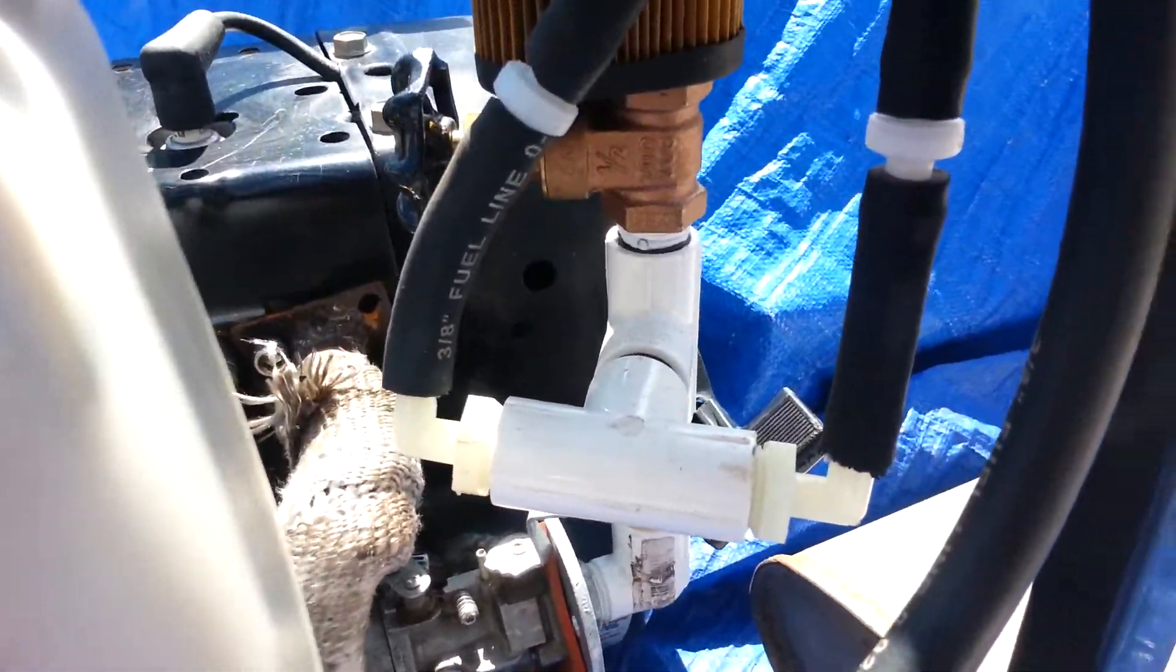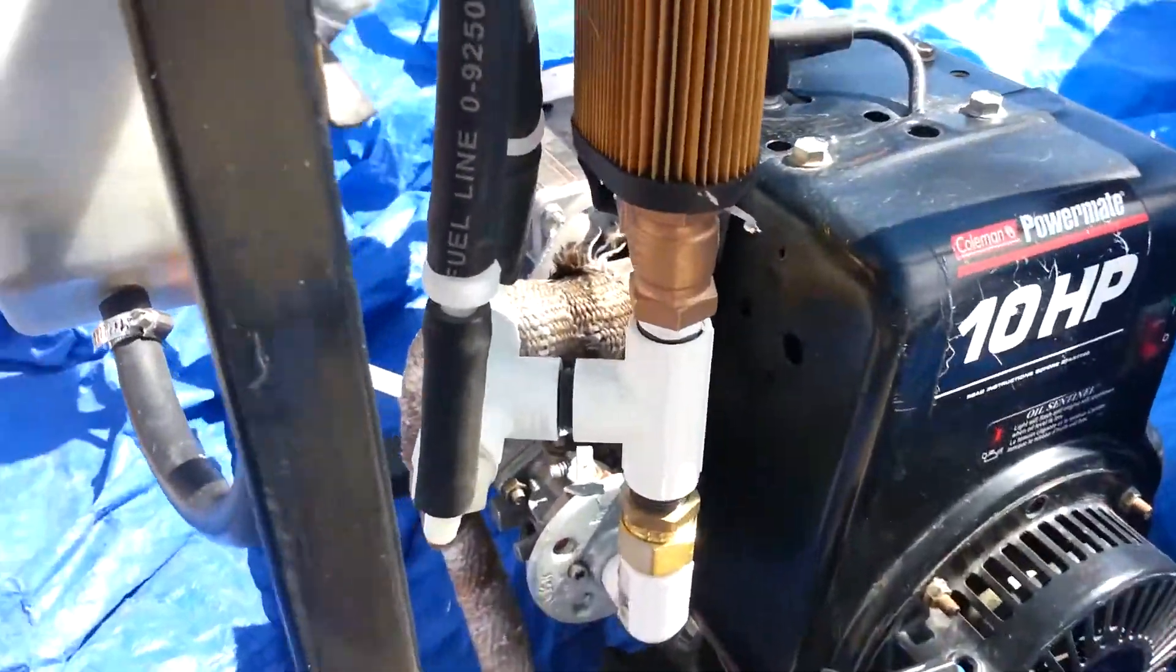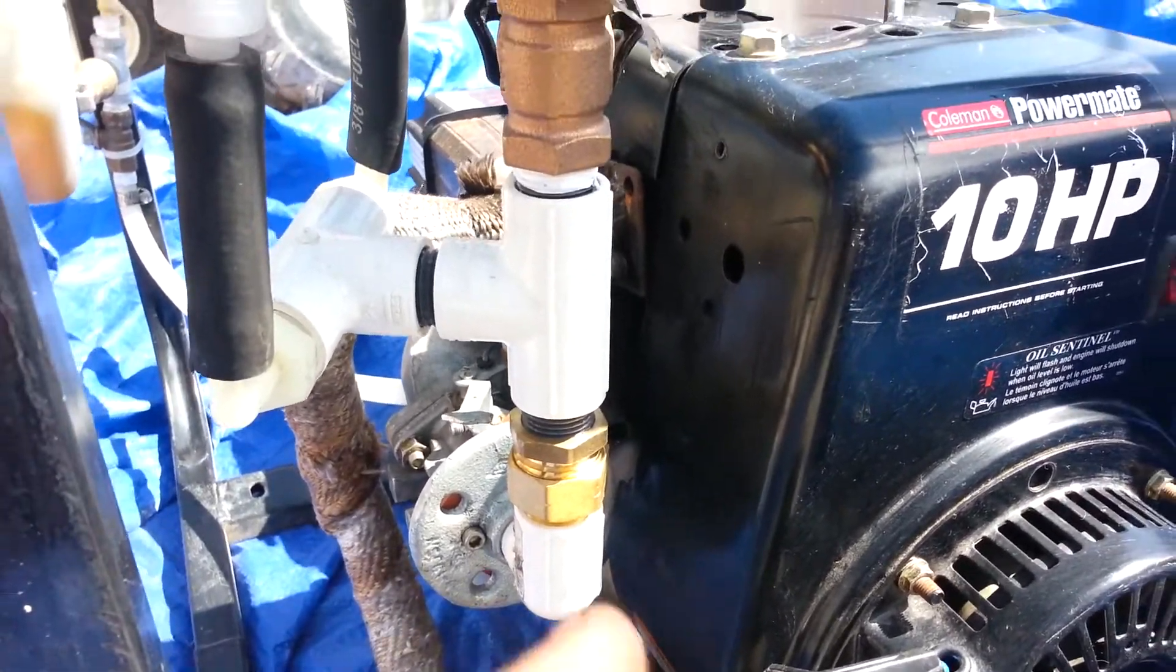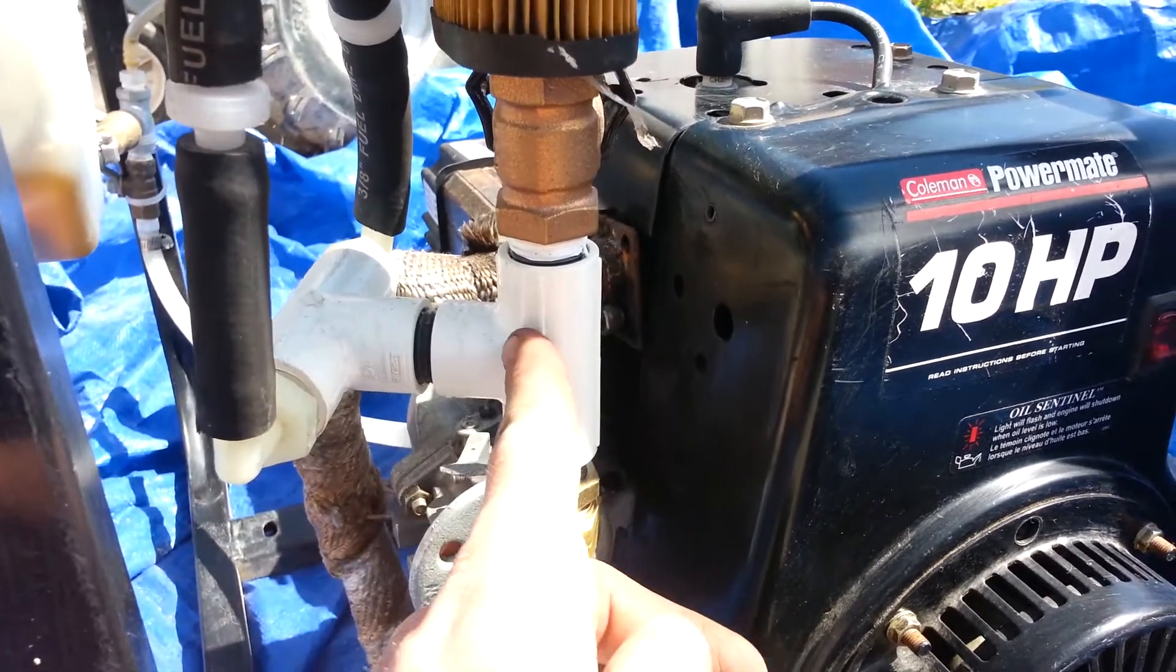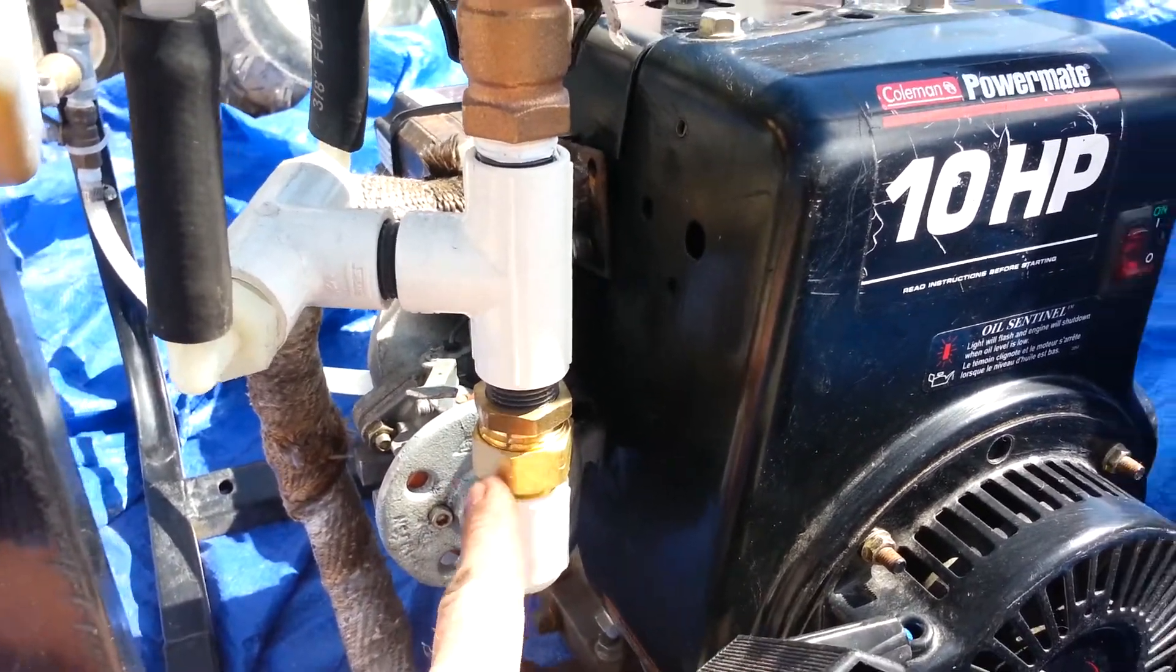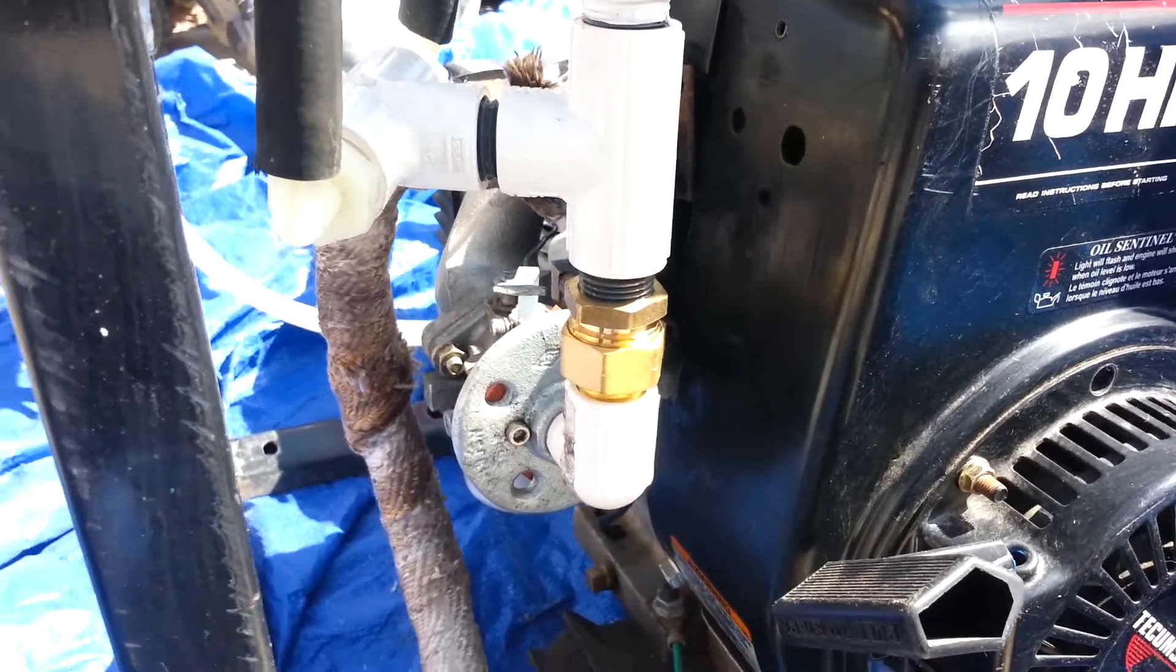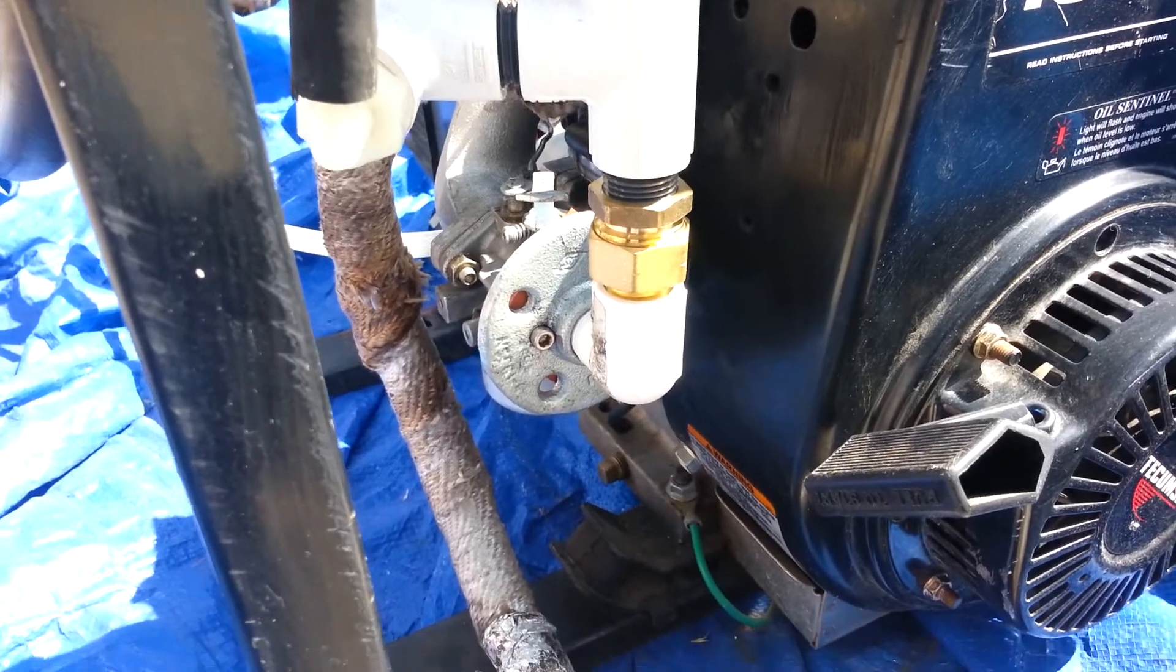And from there the fuel goes through the T. The air vapor mixture then passes into this T, combines together, and it goes through this flashback arrestor. You can see that arrestor in a different video. I did a detailed video of how to make those.